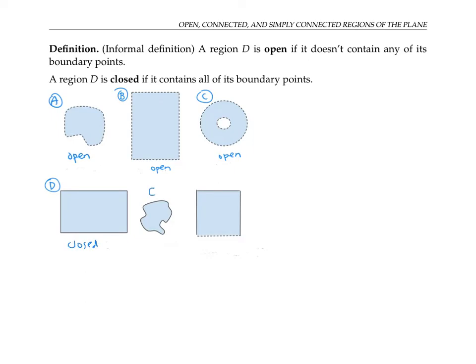Similarly, the next region E is closed because it contains all of its boundary points. This final region F contains some of its boundary points, but not all of them. It can't be closed because it doesn't contain all of its boundary points, but it can't be open either because it contains some of its boundary points. So F is an example of a region that is neither open nor closed.